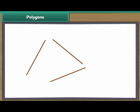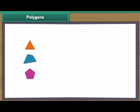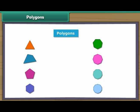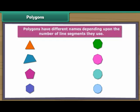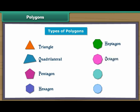We can form different shapes by enclosing them with line segments on all sides. Such closed figures are known as polygons. Polygons have different names depending upon the number of line segments they use. Here we look at the following types of polygons: triangle, quadrilateral, pentagon, hexagon, heptagon, octagon, nonagon, and decagon.